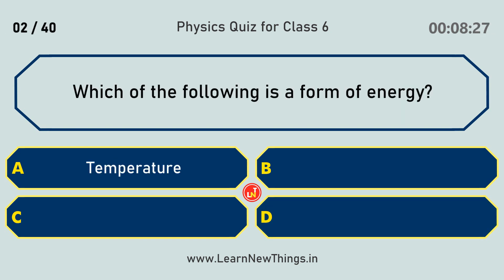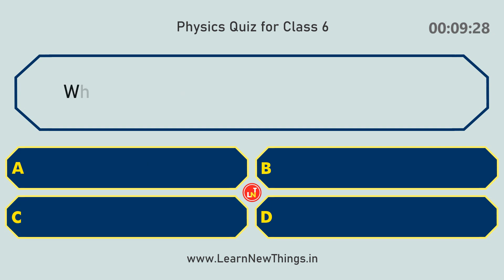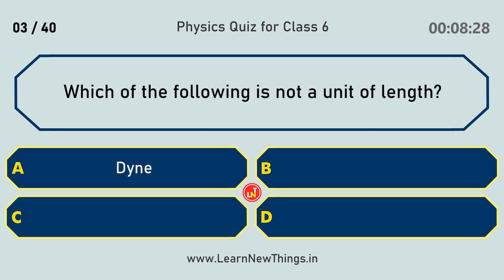Which of the following is a form of energy? Light. Which of the following is not a unit of length? Dyne.